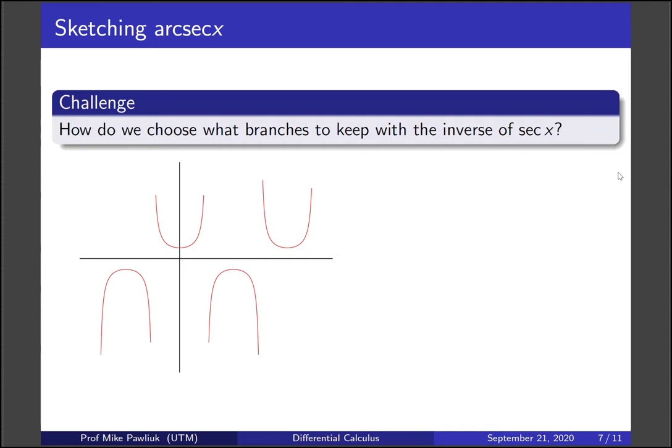Here's what secant looks like, or at least a couple of its bumps. And these asymptotes are happening at pi over 2 and minus pi over 2. This is where cosine is 0. And when we reflect it we get this. Now what branches would you like to choose?